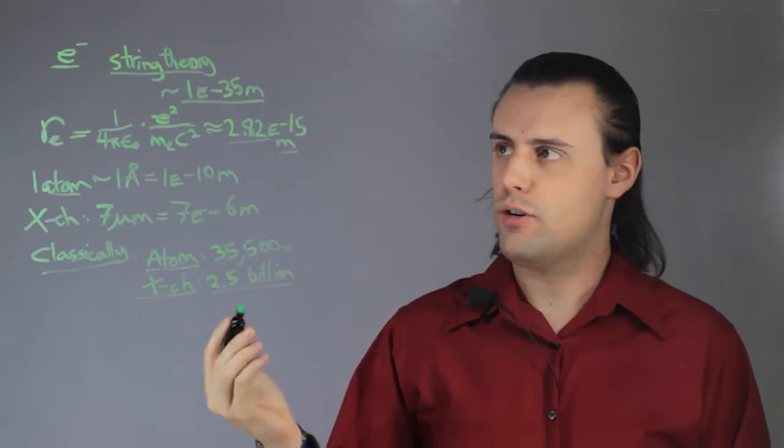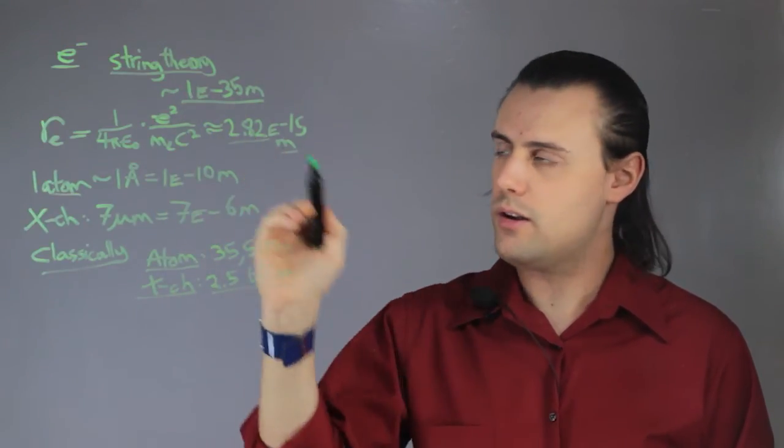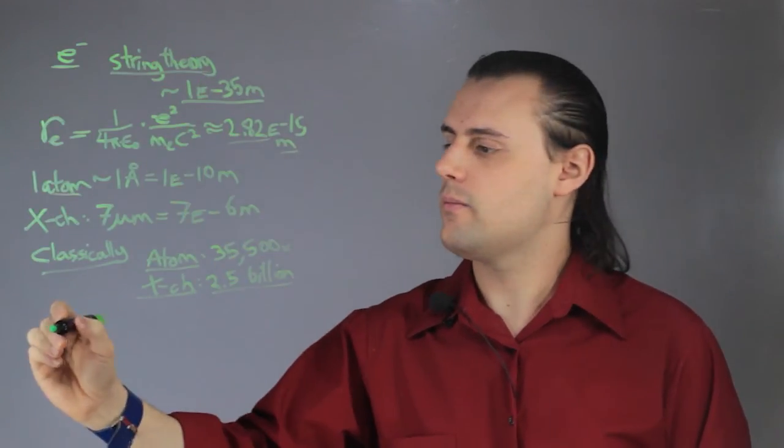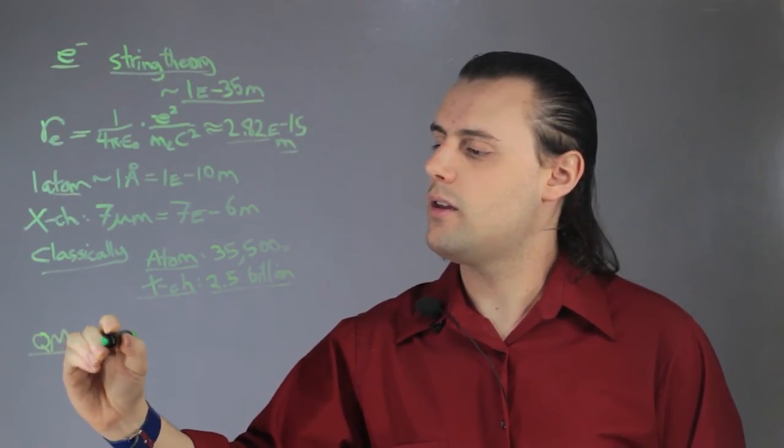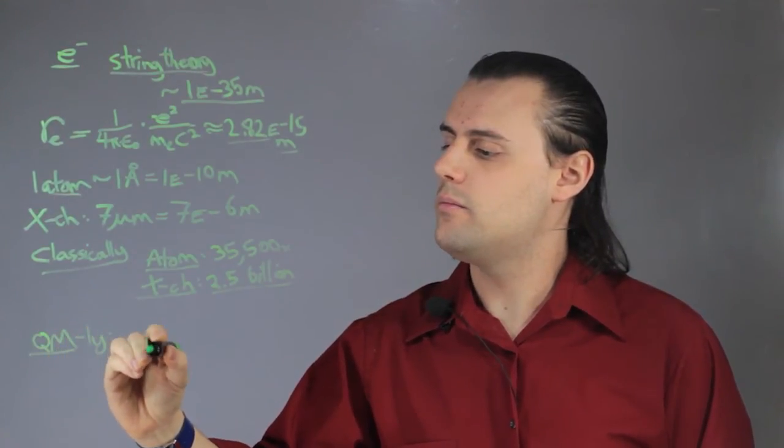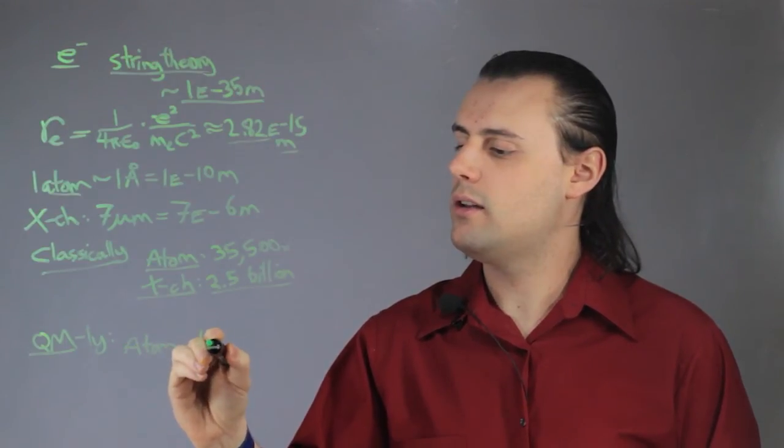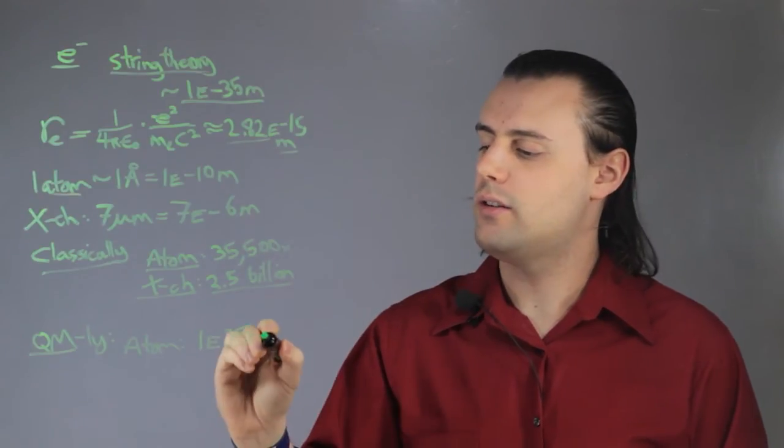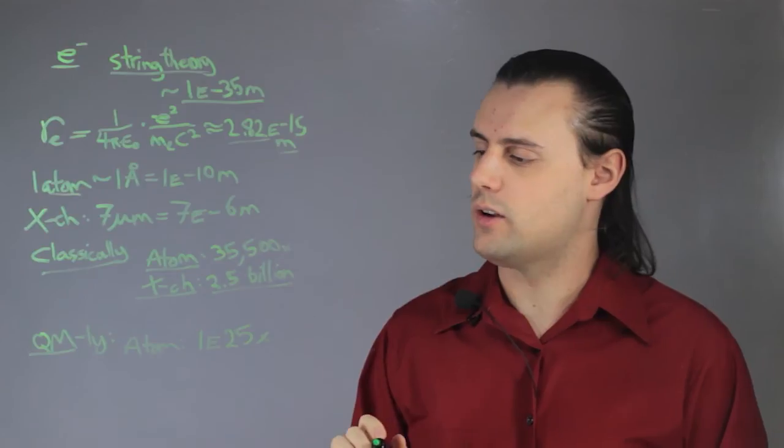If we're to assume that the electron size is truly on the order of a Planck length, such as string theory would predict, then an atom would be approximately 1 times 10 to the 25 times larger. That's a 1 with 25 zeros after it.